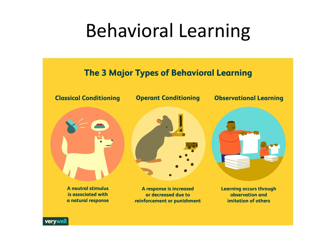Now let's talk about three major types of behavioral learning. We have classical conditioning, where a whistle is blown and the dog is ready for food. Operant conditioning, where the rat voluntarily pulls a lever and food comes out. And observational learning, where a young boy follows what his dad is doing. Classical is based on stimulus, operant is based on consequences, and observational learning is based on modeling.